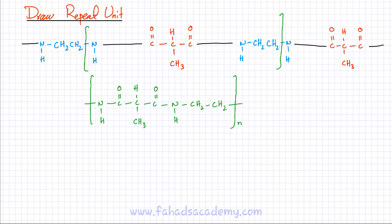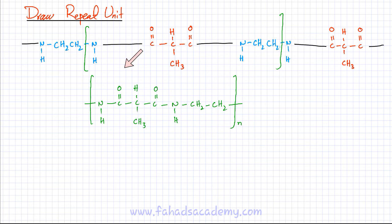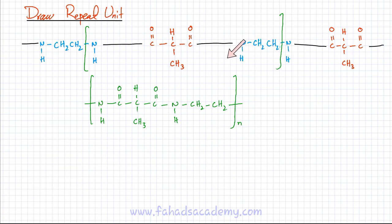Remember one thing: repeat units could be of different types for the same polymer — it depends on where you start. If I had started at this point, then I would be ending at this point. If I had started at this particular point, then I would be ending at this point. Repeat units could vary, as long as they make sense and your repeat unit is the part of the polymer chain that continues to repeat again and again.